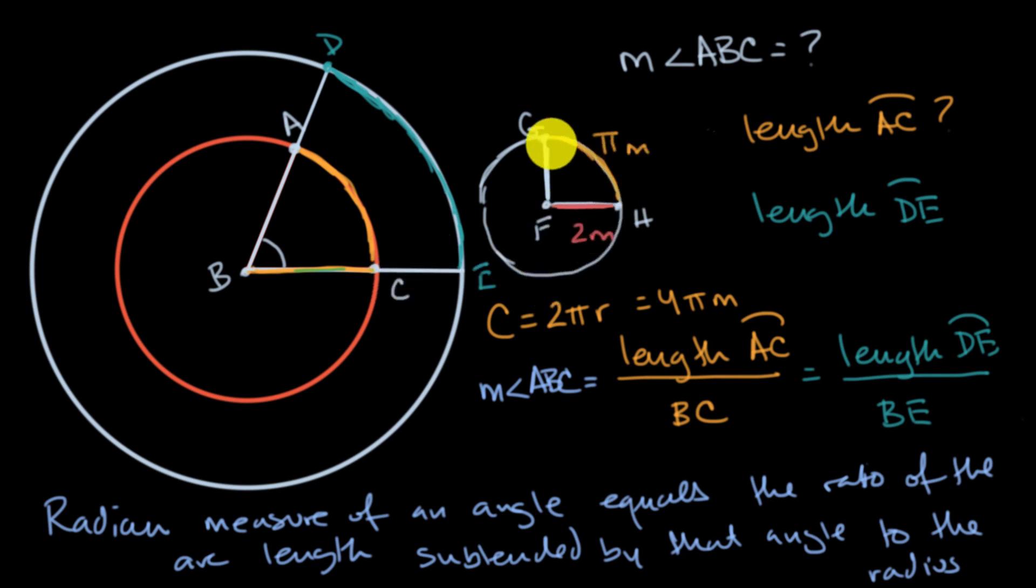And so based on this arc length and this radius, what is going to be the measure of angle GFH in radians? Well, we could say the measure of angle GFH in radians is going to be the ratio between the length of the arc subtended and the radius.